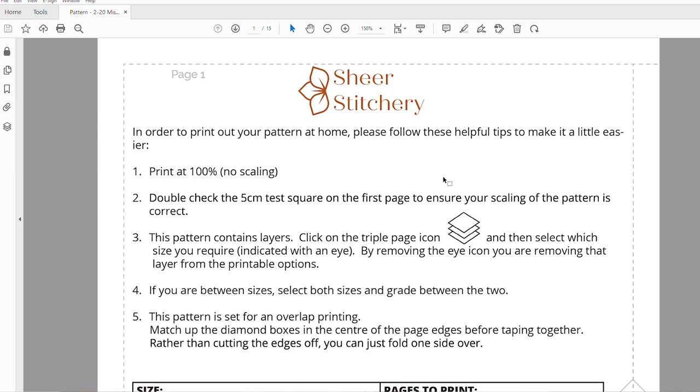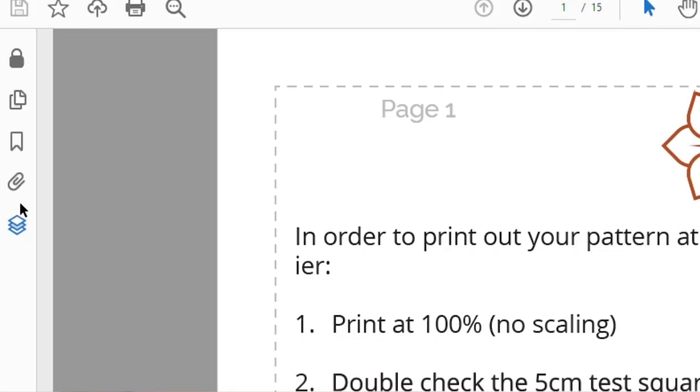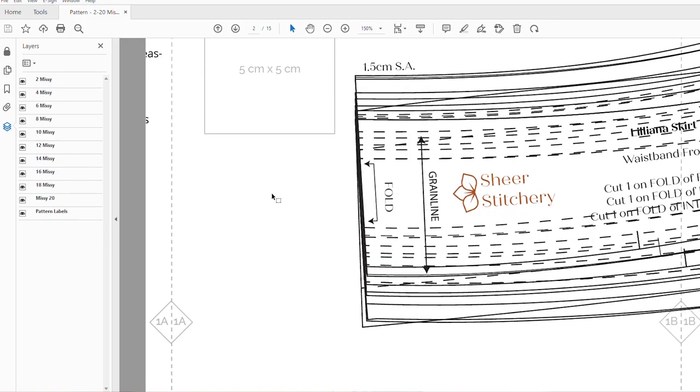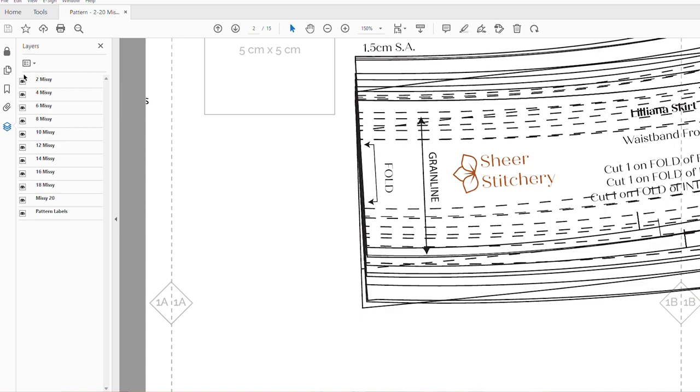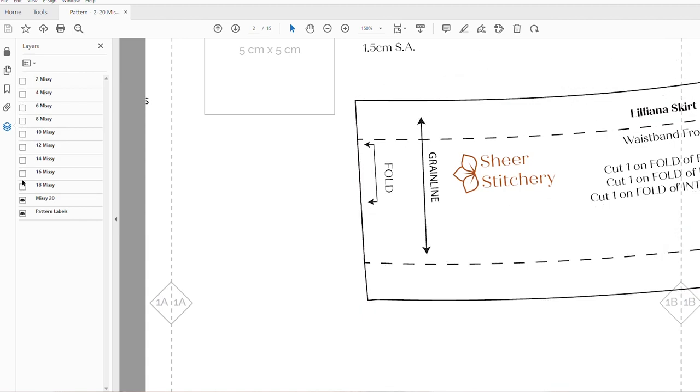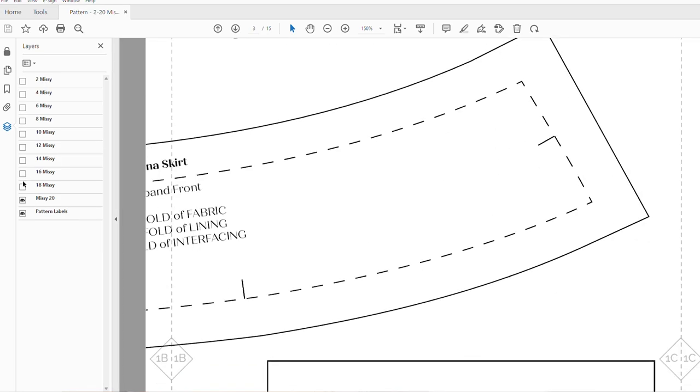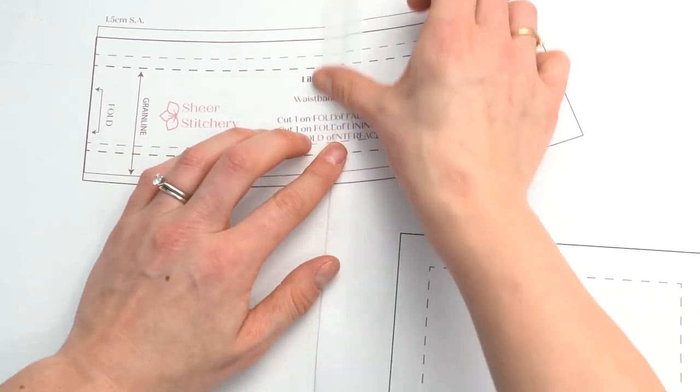And once you have your pattern printed out you're going to want to attach them together. Now one thing I did have is layers on the pattern so you can actually go on the side and you can click out any of the layers that you don't want to print if you're only making a size extra small for a small puppy like my cavapoos here then you can just click out all of the large sizes and it'll only show you the small version of the bandana. And then you just need to tape your pattern together and then we can get stitching.